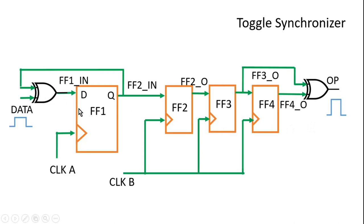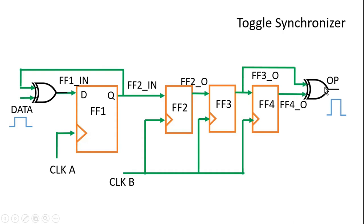In the beginning, assume that the output of all flip-flops is zero. Flip-flop 1, flip-flop 2, flip-flop 3, and flip-flop 4 are all carrying zero at their outputs, and the data input is also zero. Zero and zero applied to the XOR gate gives output zero, which propagates on the positive clock edge. So zero is constant throughout the chain, and the XOR gate in clock domain B also outputs zero since both its inputs are zero.